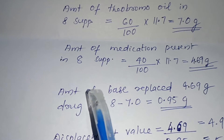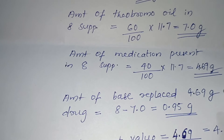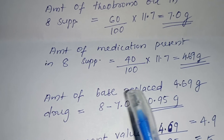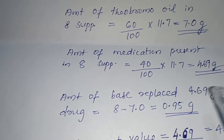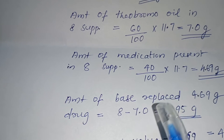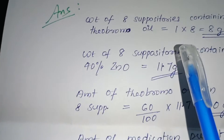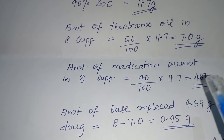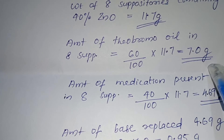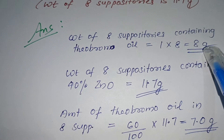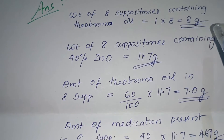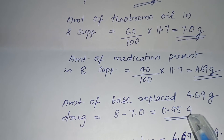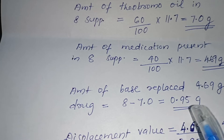Next, we find the amount of base replaced by 4.69 gram of drug — this is why we are working with displacement value. Some amount of base is displaced by the drug. The theoretical weight of base is 8 gram, minus the actual quantity of base needed, which is 7 gram by calculation. So 8 minus 7 gives 0.95 gram as the amount of base displaced.